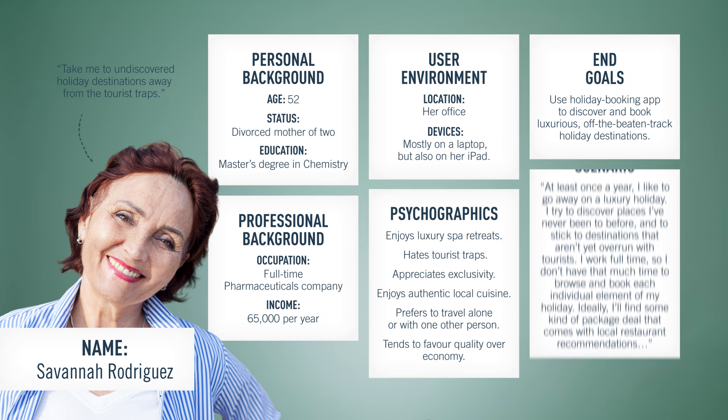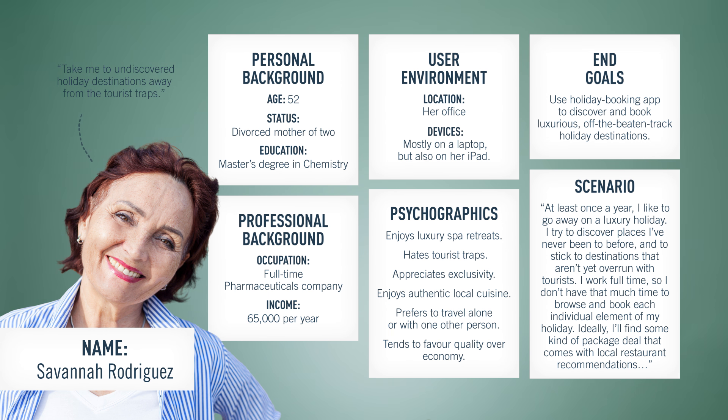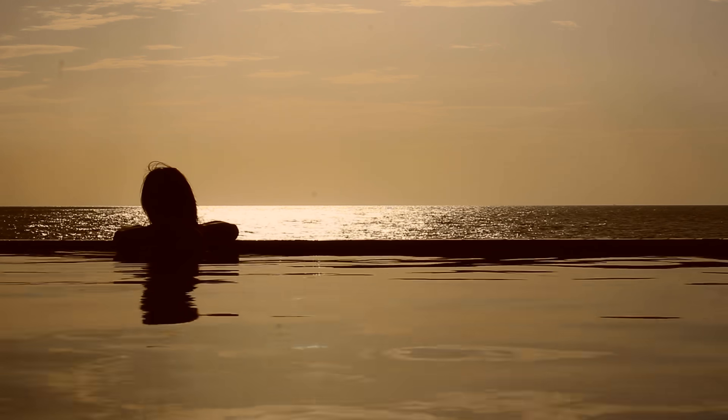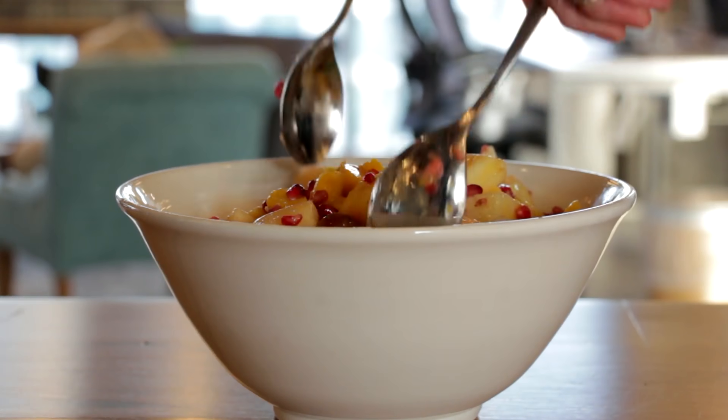You'll present your persona in a document like the example shown on the screen right now. You can include an image and a made-up name together with fictional details that help to build up your persona and make them feel real. If you're designing a holiday booking app, for example, you might mention that your persona loves luxury spa retreats but hates all-inclusive dining. You'll also add demographic information based on factual data gathered as part of your user research. Quotes from real users can also help to paint a vivid picture of your target user.